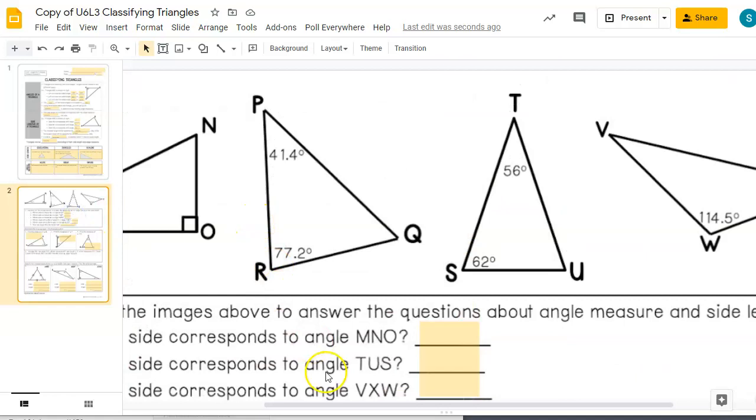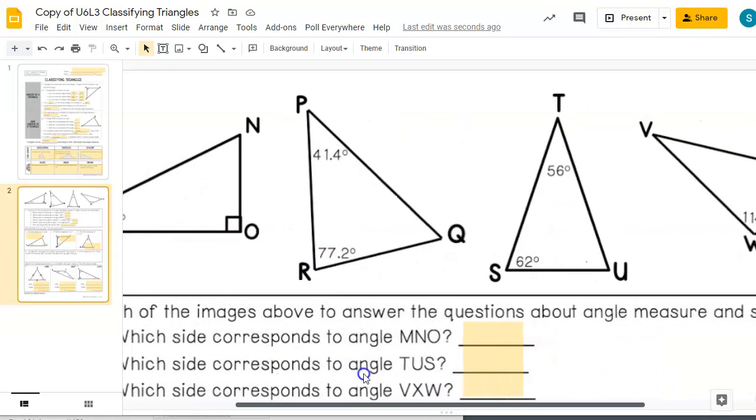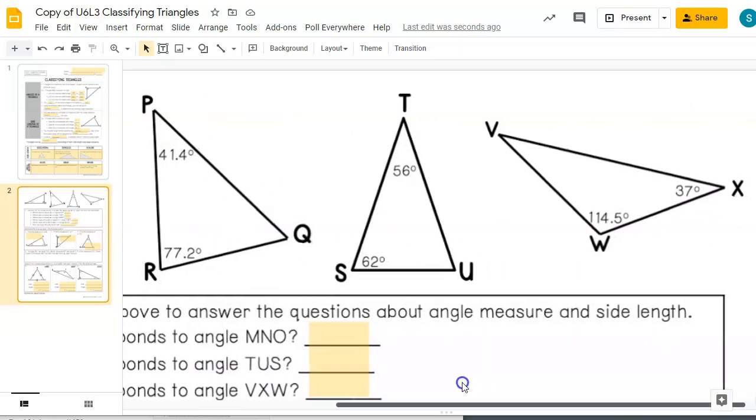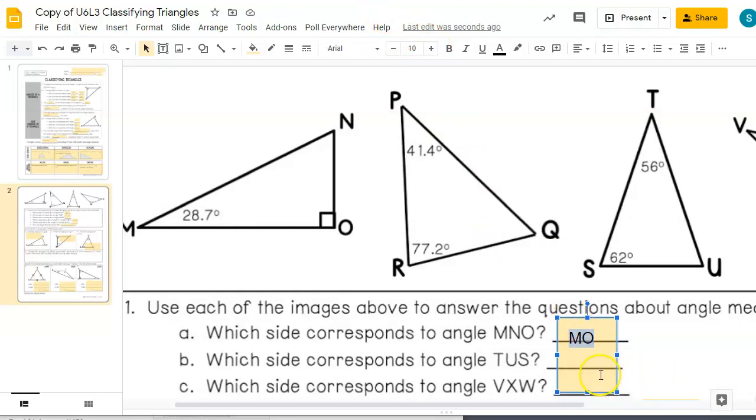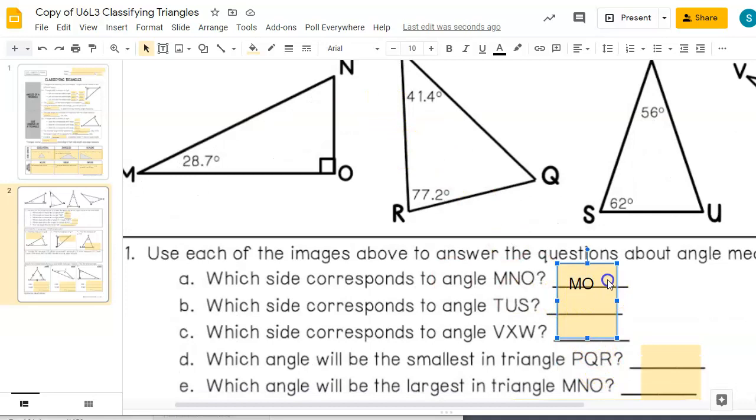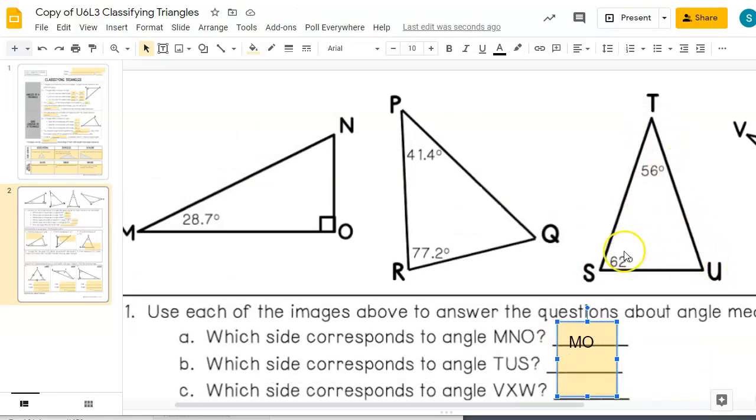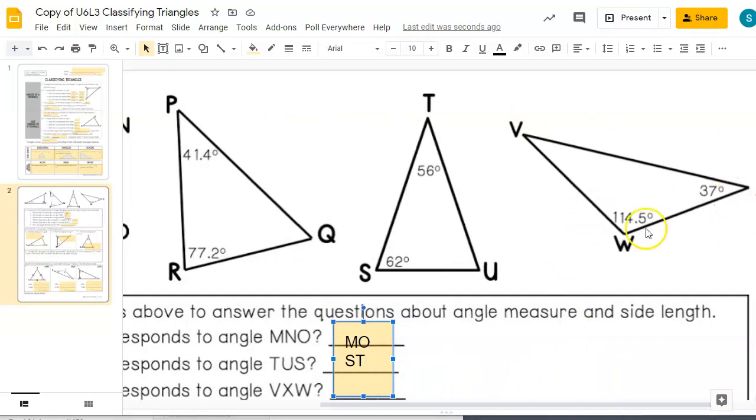Let's go ahead and look at page two here. Use each of the images above to answer the question about the angle measure and the side length. So which side corresponds to M-N-O? So that angle, that would be the one across from it, M-N-O. That would be M-O. Let's look at angle T-U-S. So T-U-S, the corresponding angle is the opposite side, so that's S-T. And what corresponds to V-X-W? So V-X-W, that's going to be V-W.